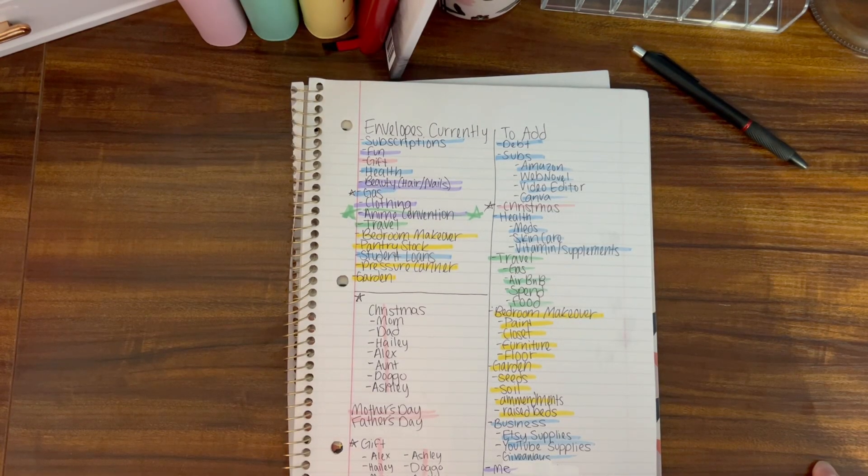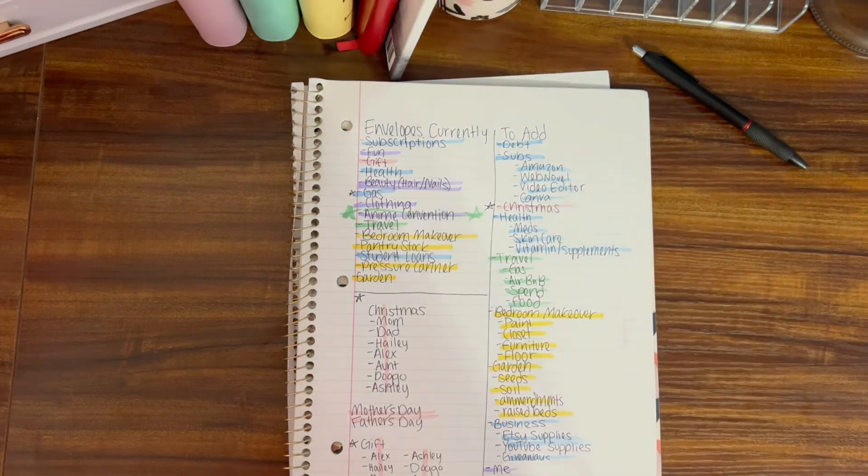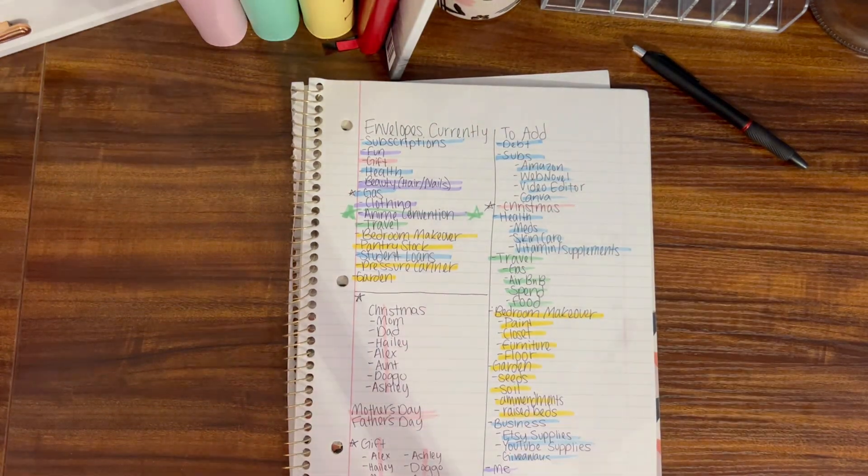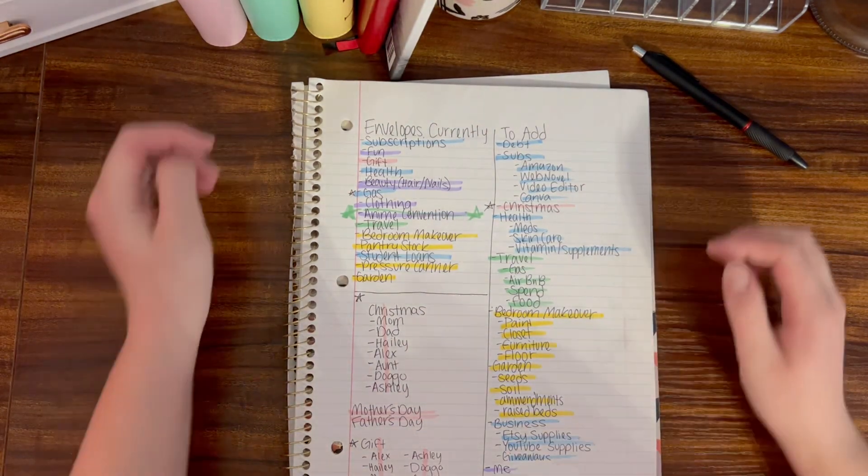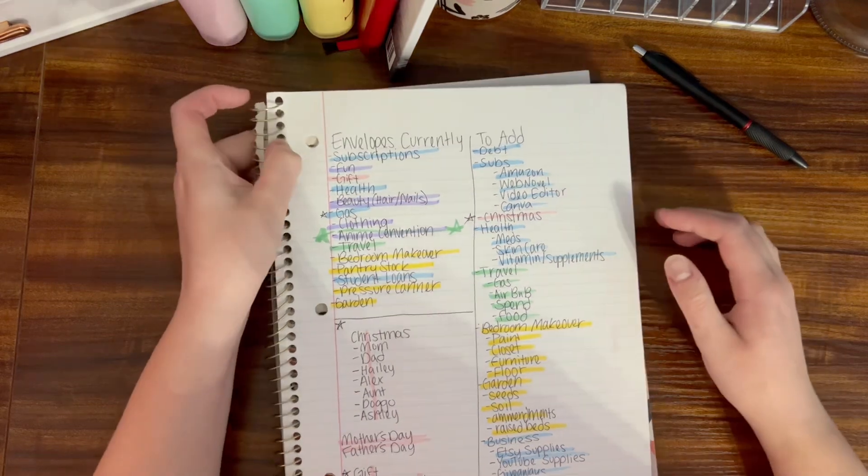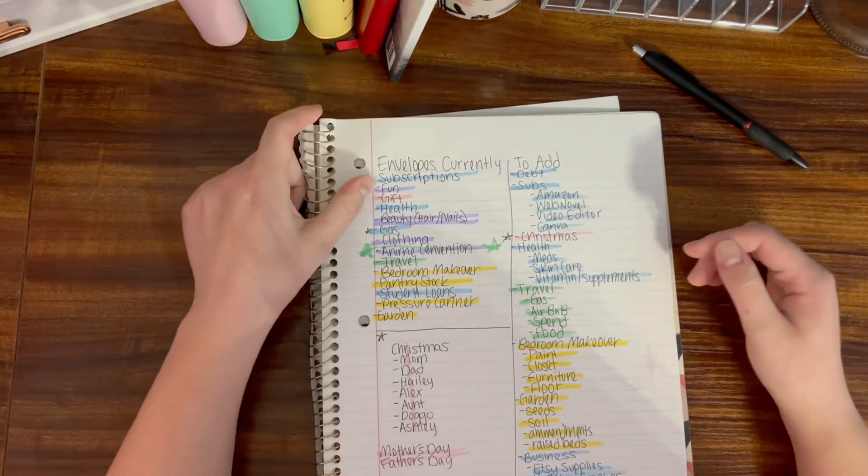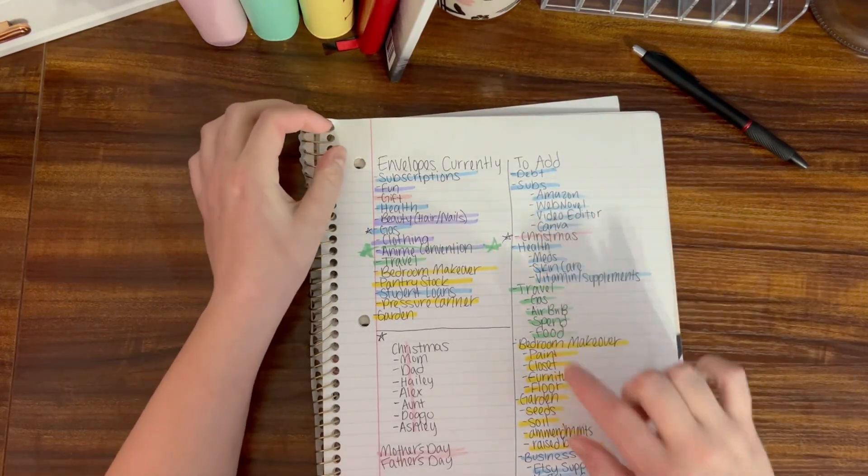Hello everybody, welcome back to Devon Tries the Budget. In this video we're going to do kind of a preview of what I want my binder situation in 2024 to look like. I have it divided by colors currently.